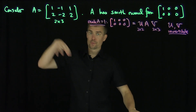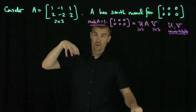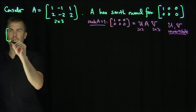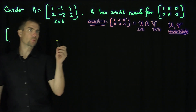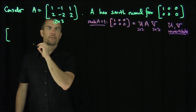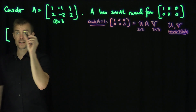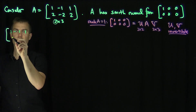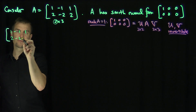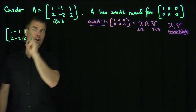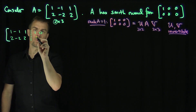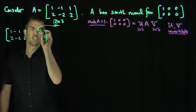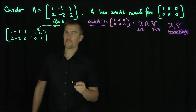So we're first going to do the reduced row echelon form of the matrix A. I'm going to augment A — this is the first phase. We're always going to augment with the identity of size equal to the number of rows. So I augment [[1, -1, 1], [2, -2, 2]] with the 2 by 2 identity [[1, 0], [0, 1]].